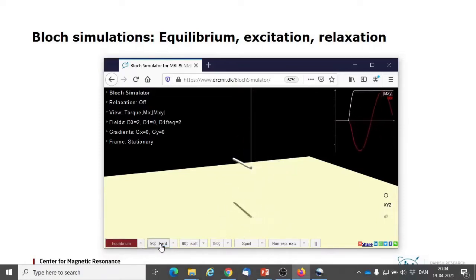In real life, T1 and T2 are sample properties, but since this is a simulation, we have flexibility. Relaxation is currently disabled, for example, but we can now introduce it.